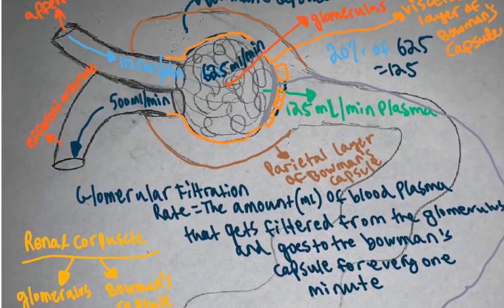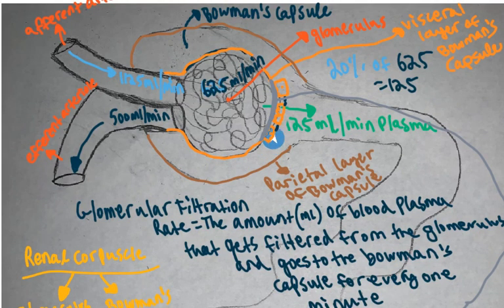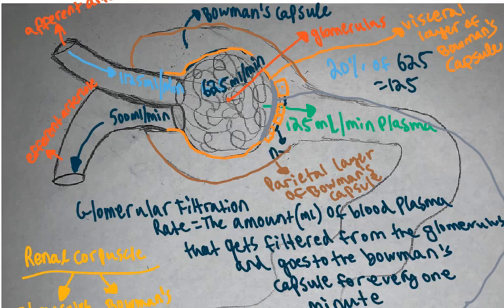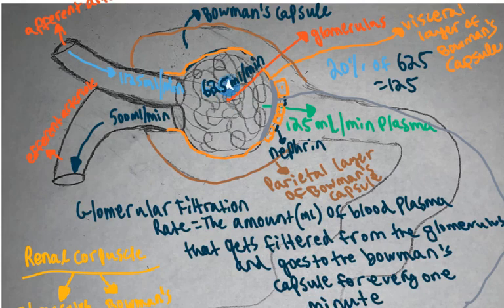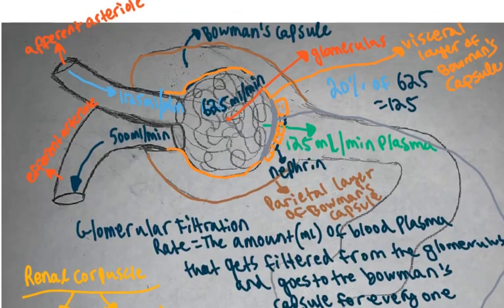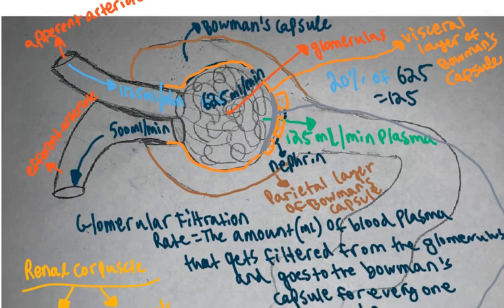So we've covered glomerular filtration, podocytes lining the visceral layer of the Bowman's capsule, the basement membrane, and nephrin proteins in the filtration slits. We also have mesangial cells inside the glomerular region, which act like little macrophages — they can phagocytose any molecules stuck in the nephrin filtration slits.